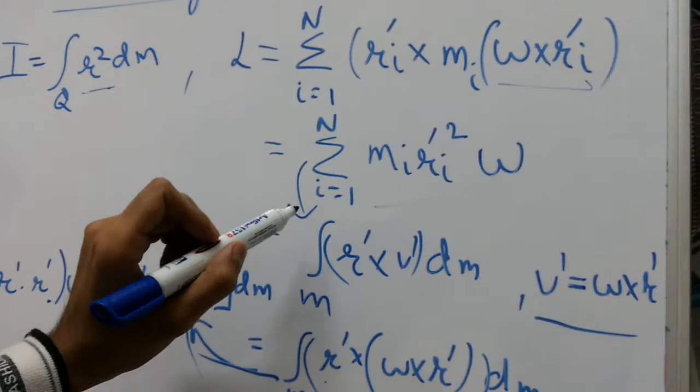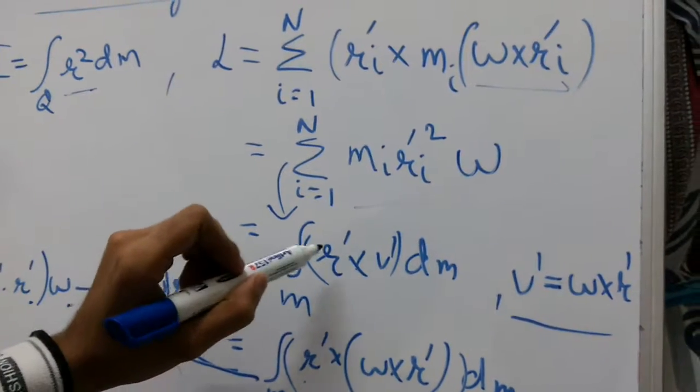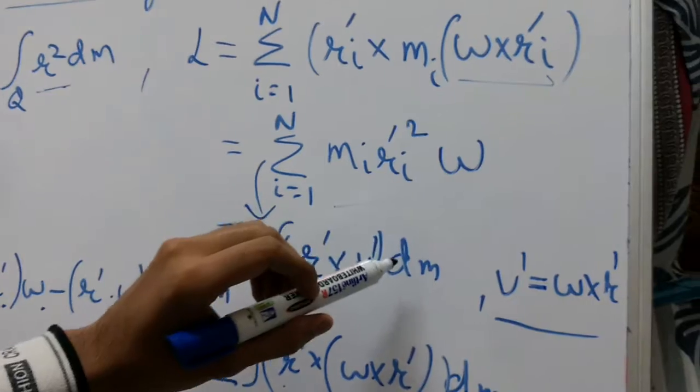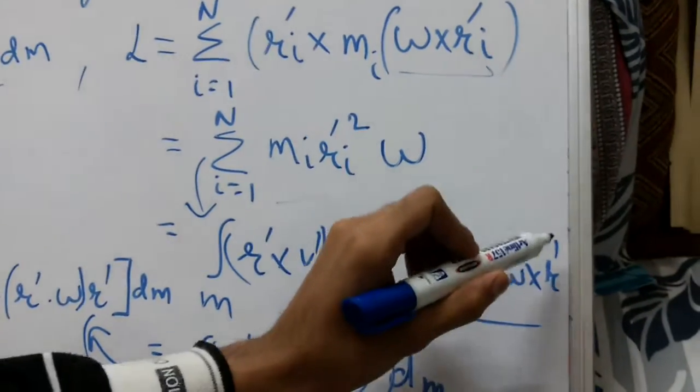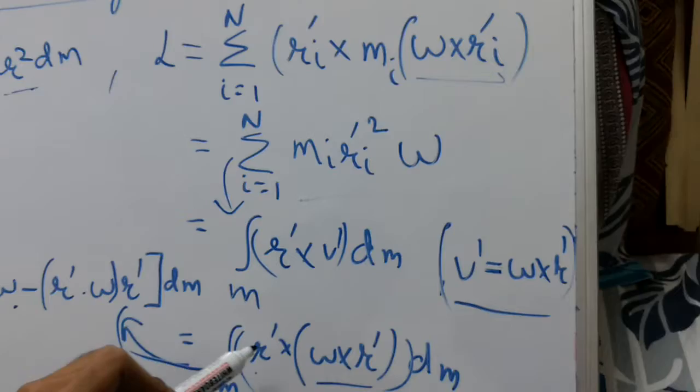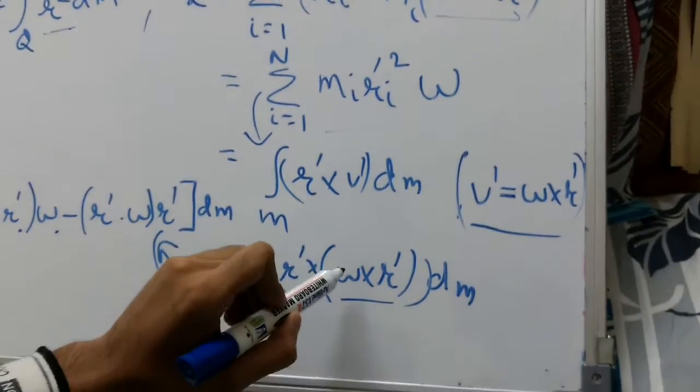It can be written as r dash cross v dash dm. If I substitute v dash equal to omega dash cross r dash vector, I will be getting r dash cross omega dash cross r dash into dm.